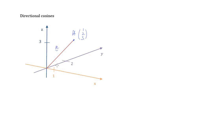In order to fully understand what is going on, you need to first understand that this vector OA makes an angle with the x-axis, with the y-axis, as well as with the z-axis. Now, how do we find this angle? We shall call it theta x, which is the angle that this vector OA makes with the x-axis.